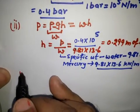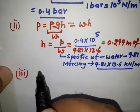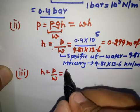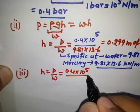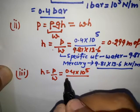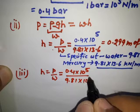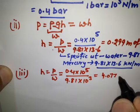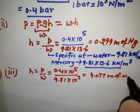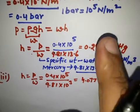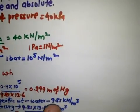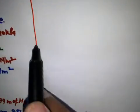In the third part, if we want to express in terms of water, we write H equals P upon W again. P is 0.4 into 10 raised to power 5, and the specific weight of water is 9.81 into 10 raised to power 3. So we get 4.077 meter of water. This is gauge pressure in case of mercury and in case of water.